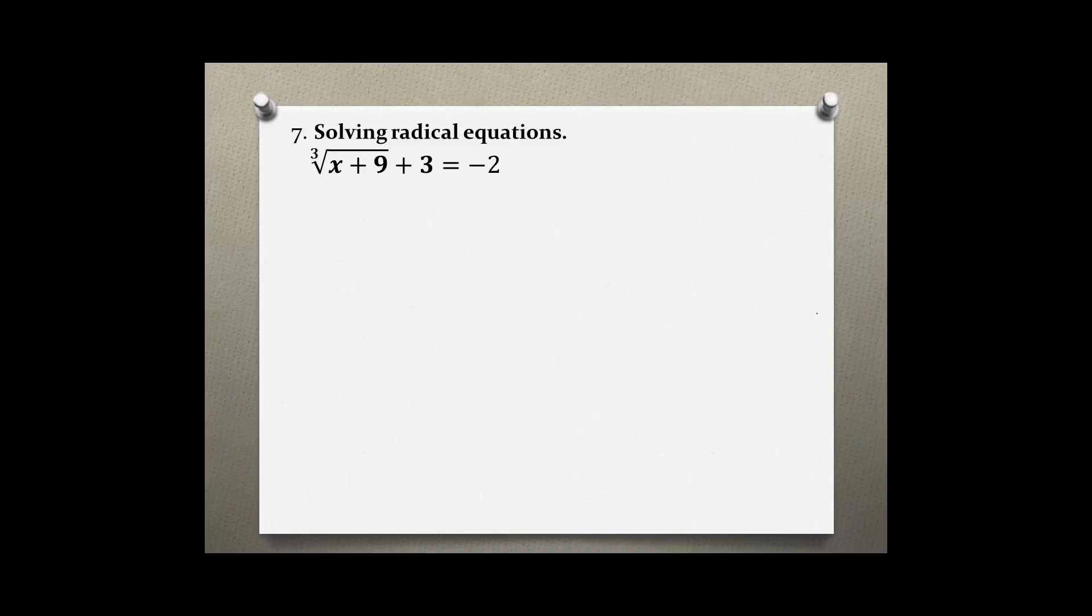Problem number seven: solving radical equations. We have the cube root of x plus nine plus three is equal to negative two. Before we can use the property to eliminate the radical, we have to isolate the radical, getting it by itself.